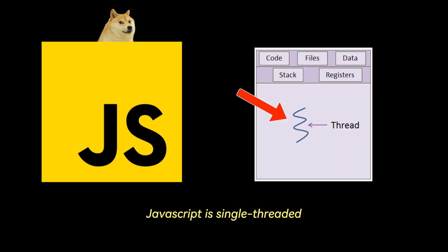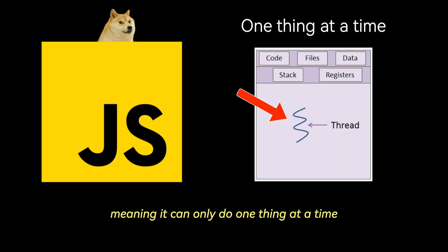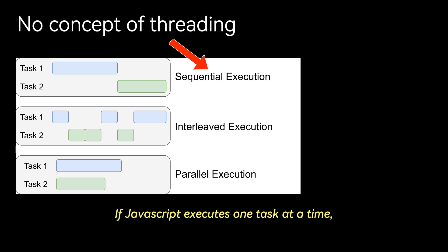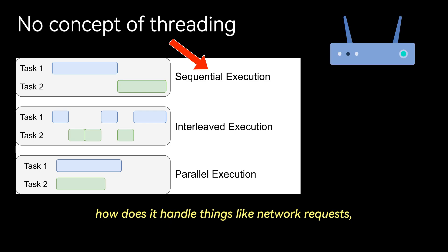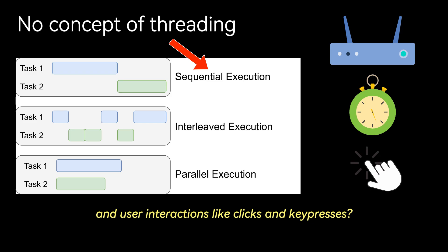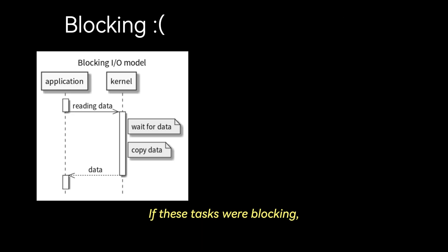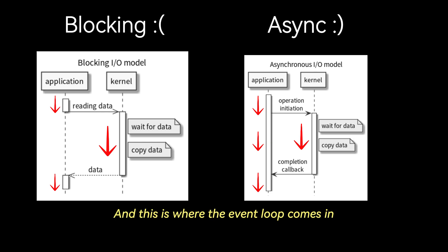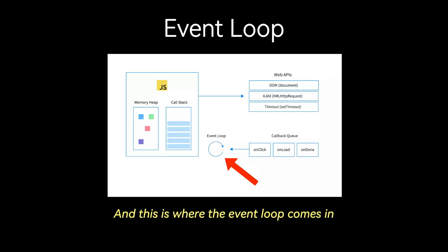JavaScript is single-threaded, meaning it can only do one thing at a time. If JavaScript executes one task at a time, how does it handle things like network requests, timers like setTimeout, and user interactions like clicks and keypresses? If these tasks were blocking, your browser would freeze until they completed. And this is where the event loop comes in.